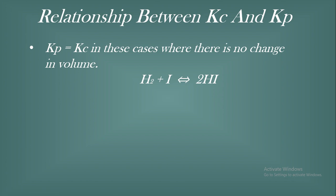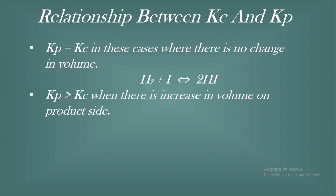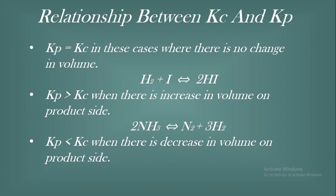Second point: Kp is greater than Kc when there is an increase in volume on the product side. For example, in 2NH₃ ⇌ N₂ + 3H₂, the product side has 3+1=4 moles while the reactant side has 2, so Kp is greater. Third point: Kp is less than Kc when there is a decrease in volume on the product side.